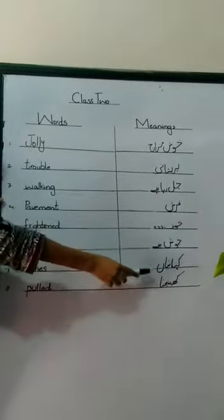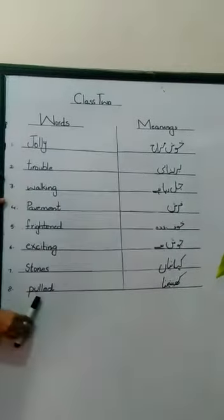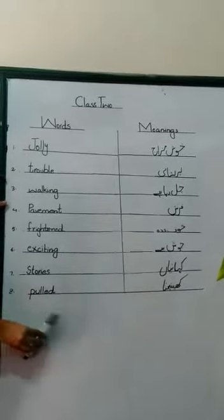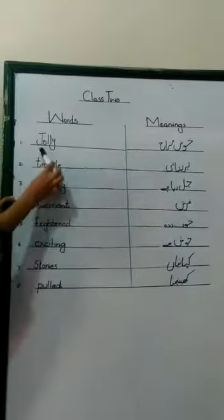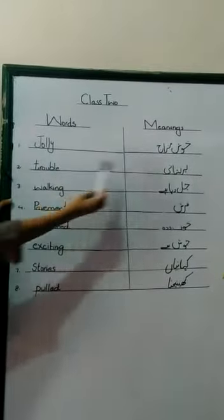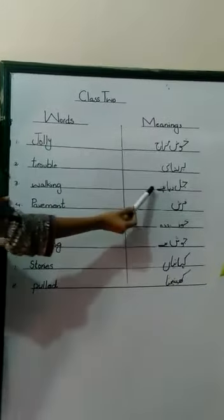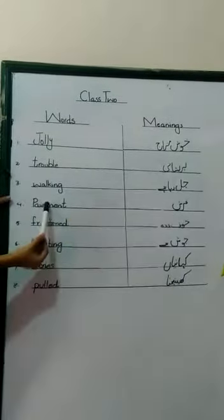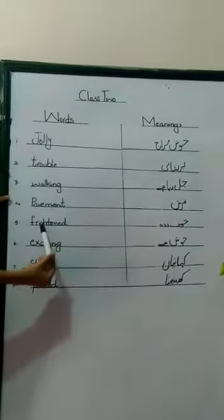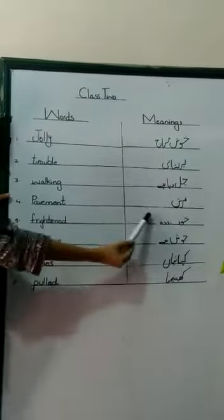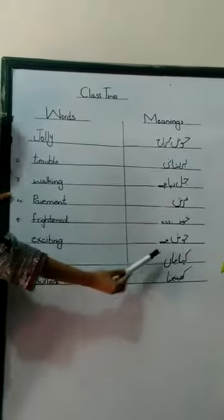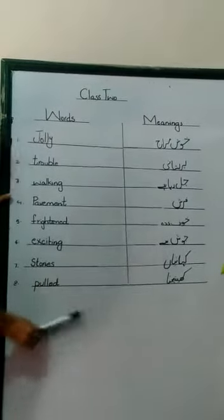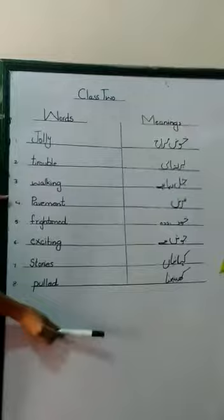Let me repeat: jolly means khushmizaj, trouble means pareshani, walking means chal raha hai, pavement means paved road, frightened means dar, exciting means josh, storage means pareshaniyaan. Pulled — P-U-L-L-E-D — means kheenchna.